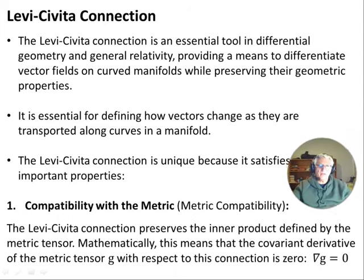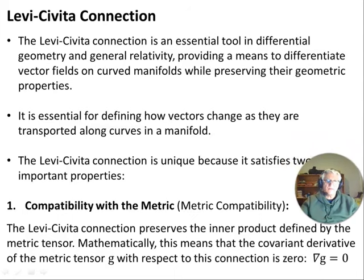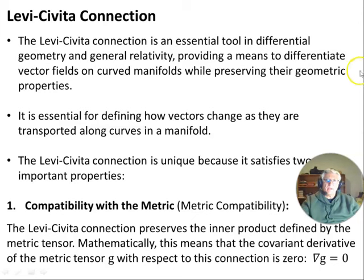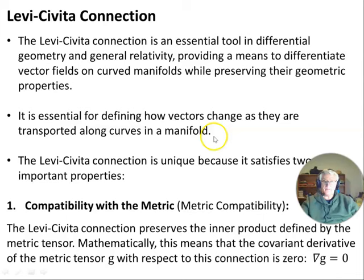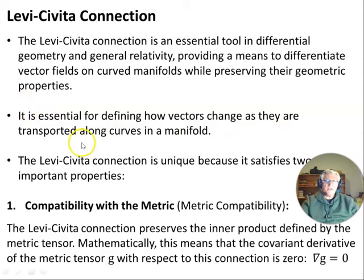The Levi-Civita connection is an essential tool in differential geometry and general relativity, providing a means to differentiate vector fields on curved manifolds while preserving their geometric properties. It is essential for defining how vectors change as they are transported along curves in a manifold. The Levi-Civita connection is unique because it satisfies two important properties.